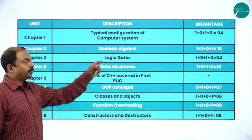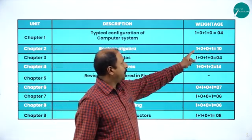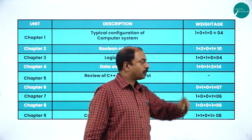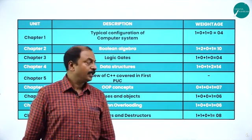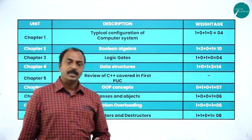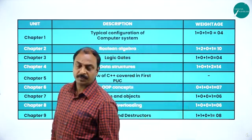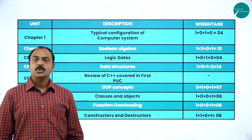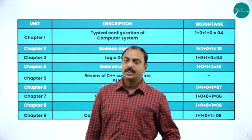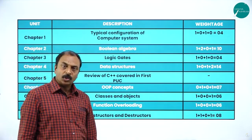Chapter two is Boolean Algebra. The weightage of this chapter is 10 marks — one MCQ, two two-marks questions, and one five-marks question. It is a very important chapter. Here we are going to learn boolean equations, what is a truth value, what is a truth table, and how to solve a boolean equation with different methods. An important concept in the chapter is the K-map, which is another method of solving a given boolean equation.